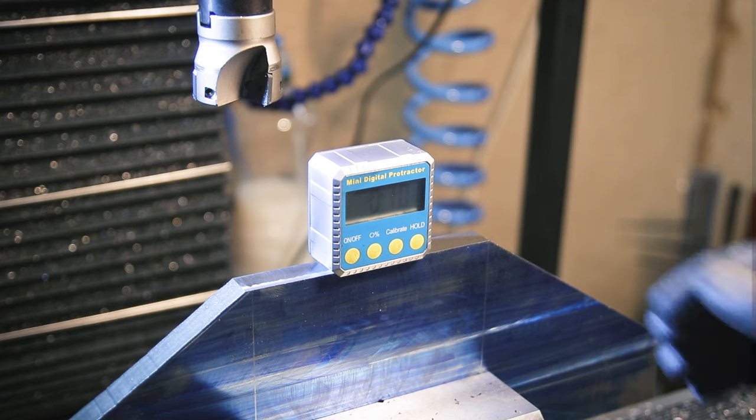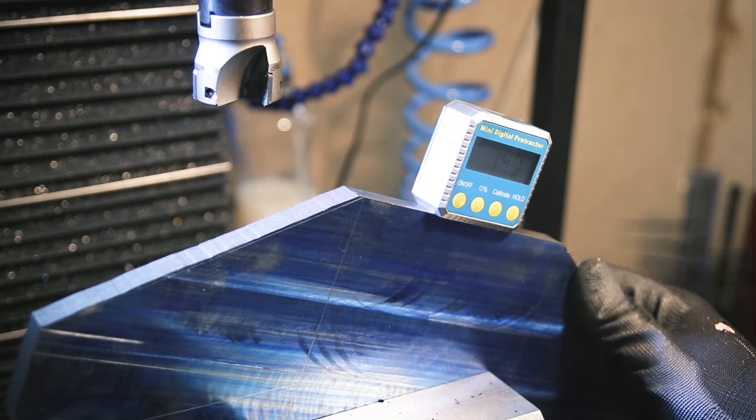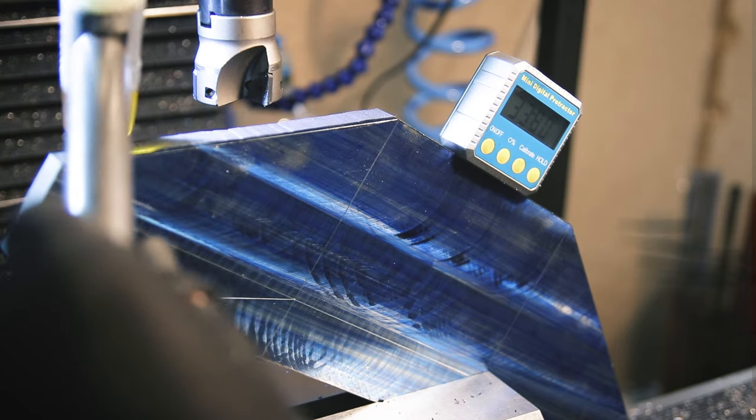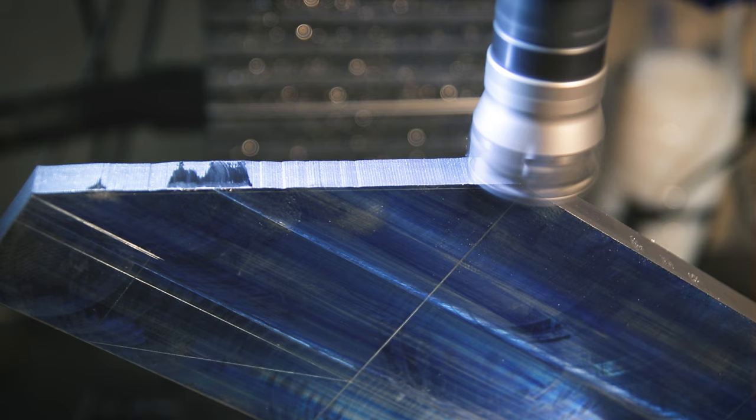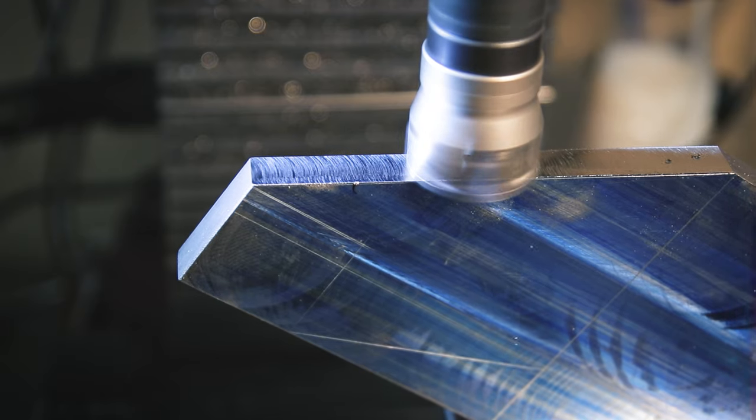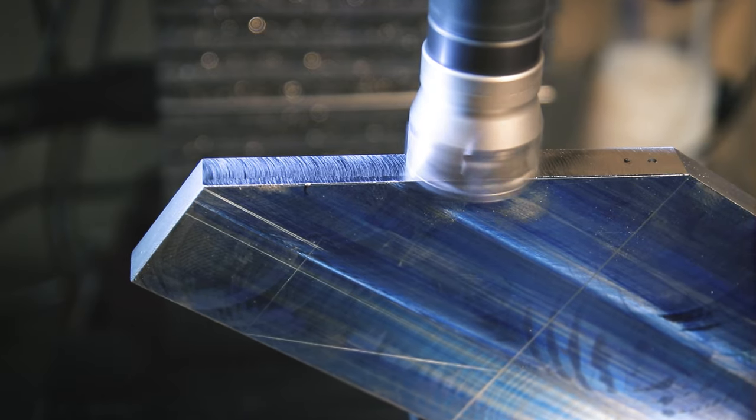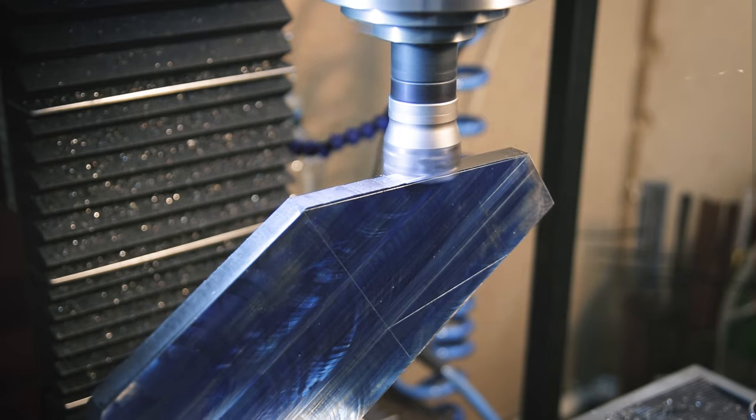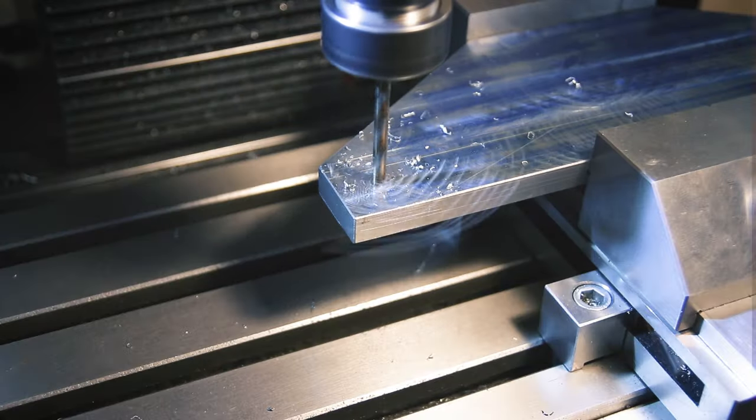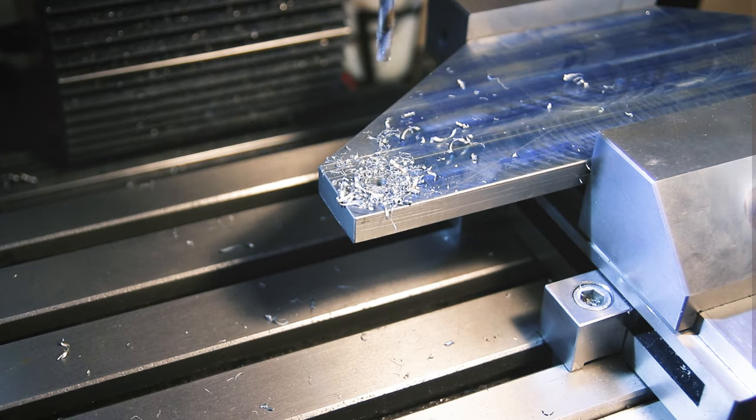I don't really trust these digital angle finders, especially cheap ones, but the angles on these edges aren't too critical, so it's a quick way of setting this up. I know the part is sticking out quite a bit and looks sketchy, but as long as I'm only milling side to side and don't take deep cuts, it works fine.